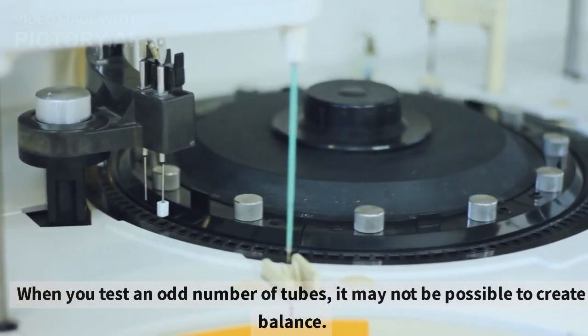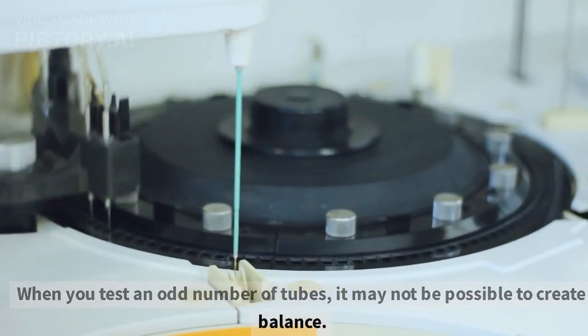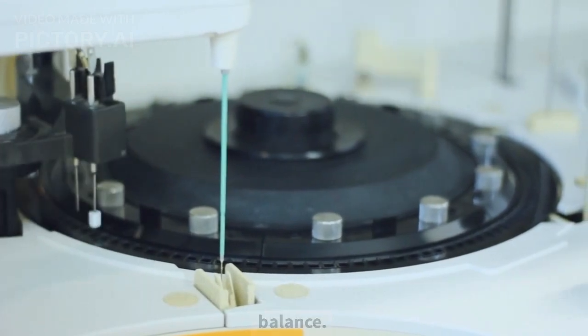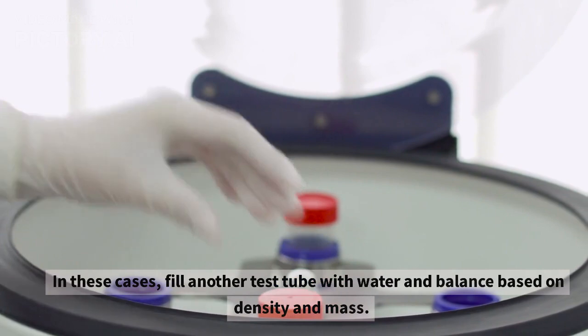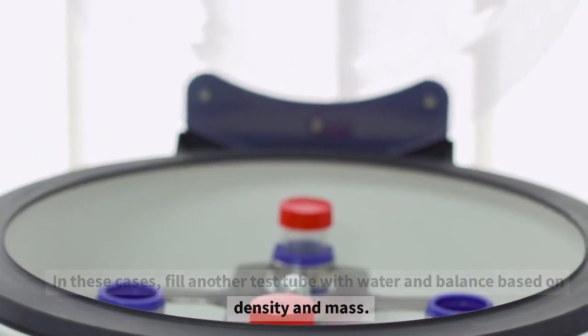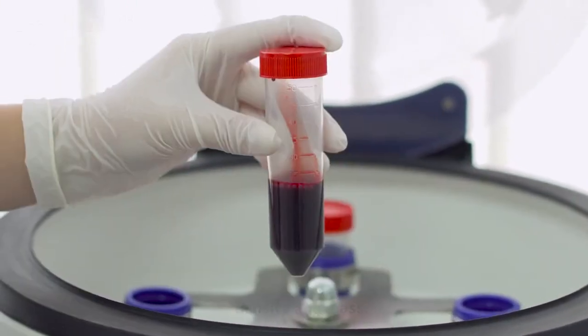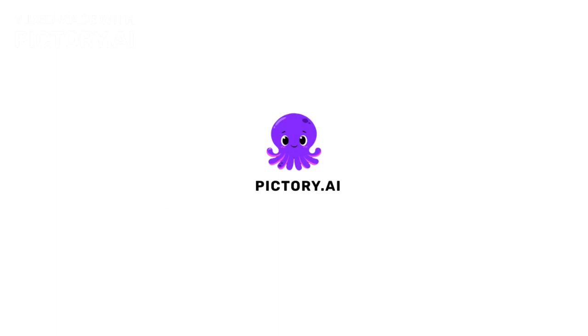When you test an odd number of tubes, it may not be possible to create balance. In these cases, fill another test tube with water and balance based on density and mass.